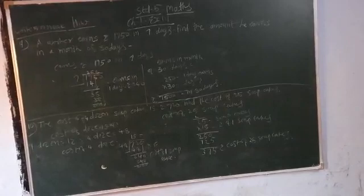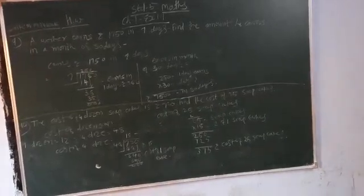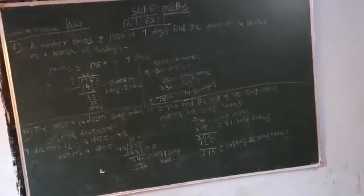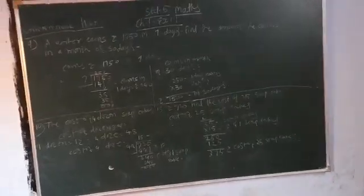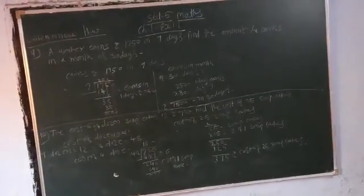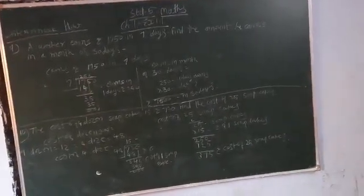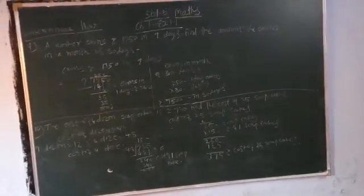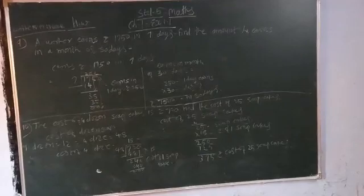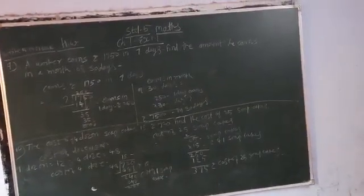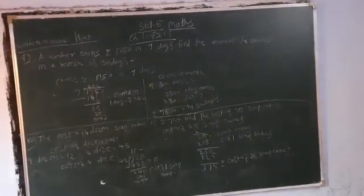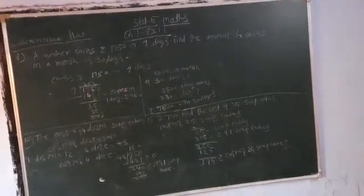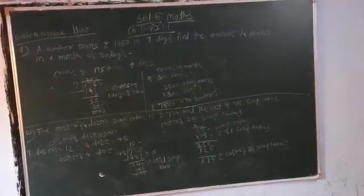So, first of all, we have to divide 1,750 by 7 to find what he earns in one day. So one day's earning is 250 rupees.